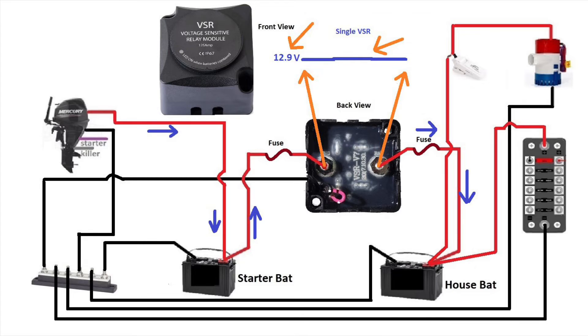Now, as soon as you shut off your engine, your voltage will drop under 12.7 volts and your VSR will reopen again, and both battery banks will be independent.